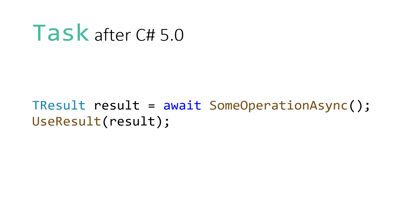Using await, you no longer need to use callbacks. Everything that comes after the await is going to be wrapped in a callback, and this will happen using a state machine. Now let's get back to the results — how are these results going to be produced?